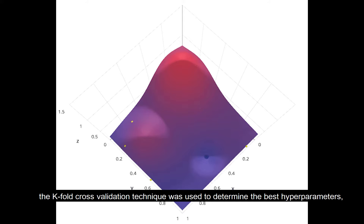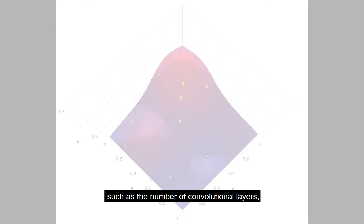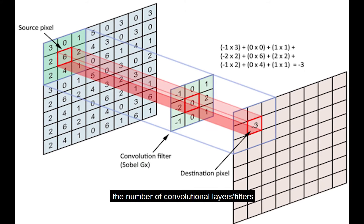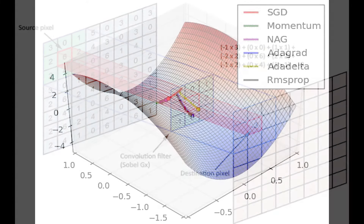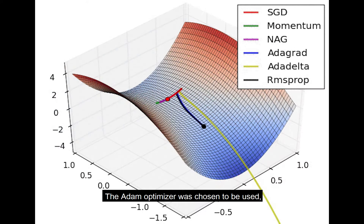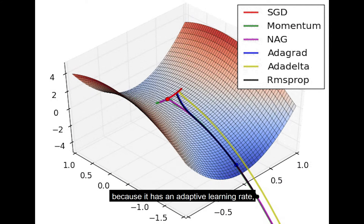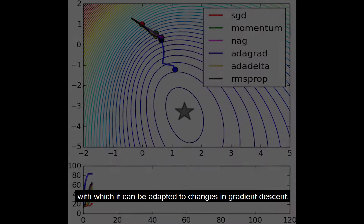During the neural network training, the k-fold cross-validation technique was used to determine the best hyperparameters, such as the number of convolutional layers, the number of convolutional layer filters, and the number of neurons in the penultimate layer, among others.